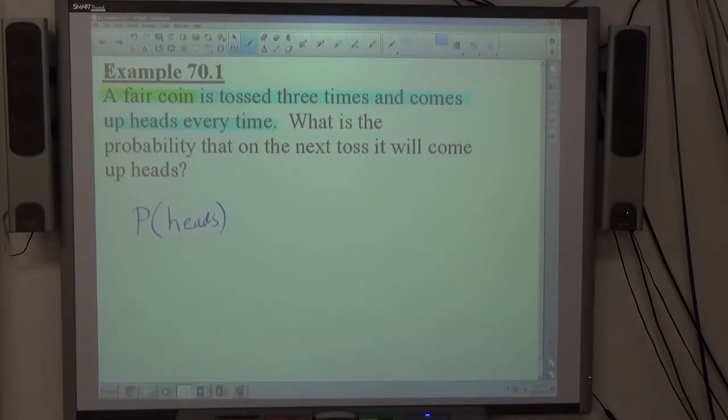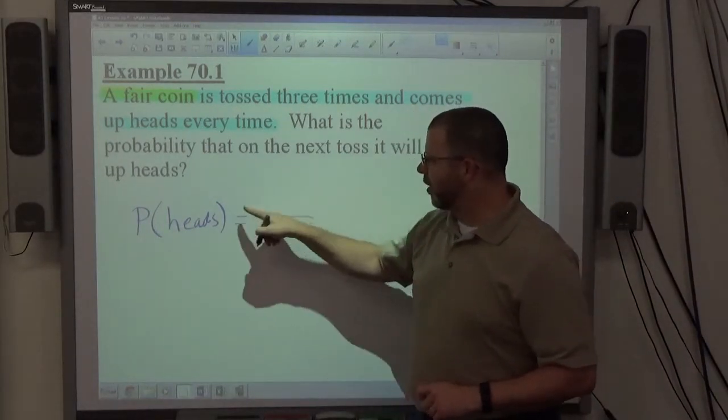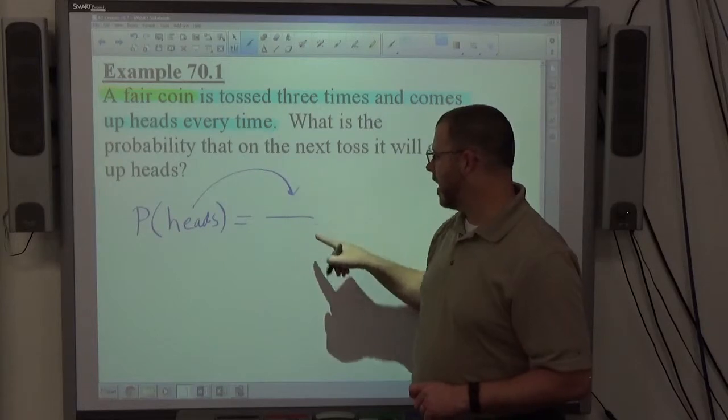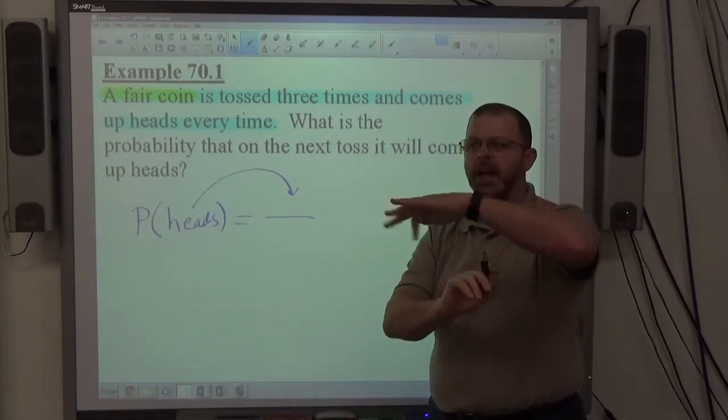P(heads) means probability of getting heads. And all we need to know to find probability is simply how many ways are there to make what we want and how many ways are there to make anything. That's what probability is. What we want over what we can get.